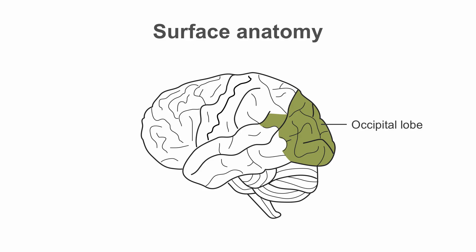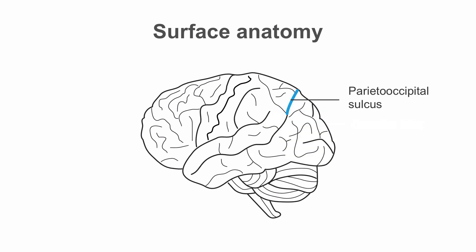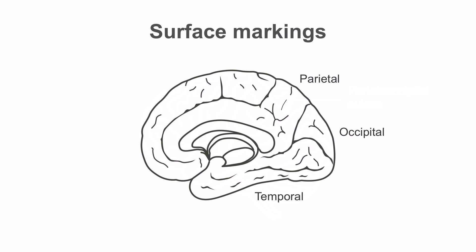Anteriorly, the occipital lobe is separated from the parietal lobe by the parieto-occipital sulcus. The occipital lobe is separated from the temporal lobe by the calcarine sulcus, which contains the calcarine cortex.